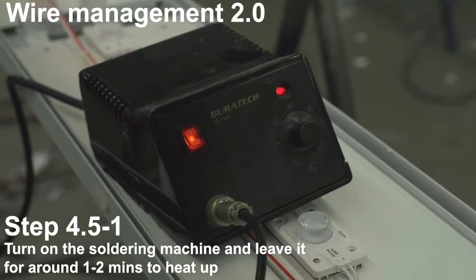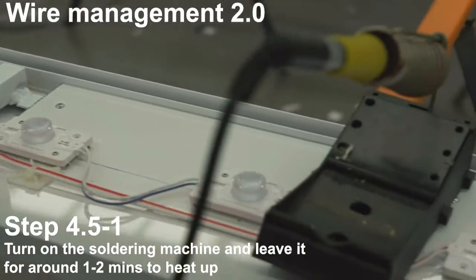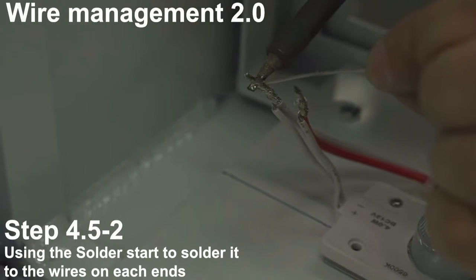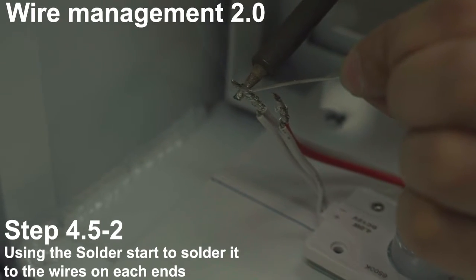Turn on the soldering machine and leave it for around 1-2 minutes to heat up. Using the solder, start to solder it to the wires on each end.